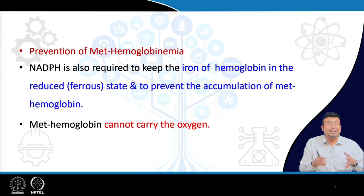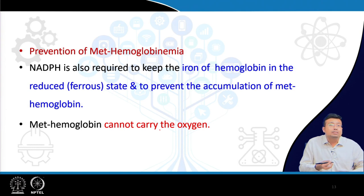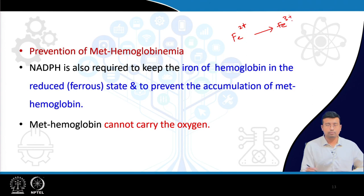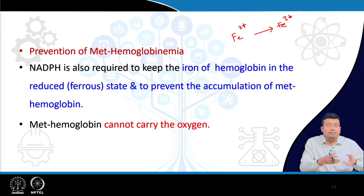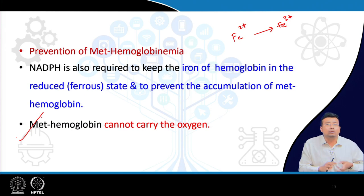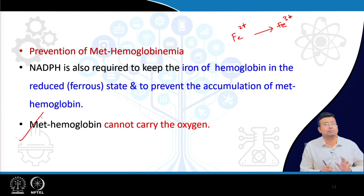NADPH is also important in prevention of methemoglobinemia. Hemoglobin carries oxygen with iron in the ferrous form (Fe²⁺), but it has a tendency to be oxidized to the ferric form (Fe³⁺), converting hemoglobin to methemoglobin, which cannot carry oxygen. NADPH helps maintain iron in the ferrous state to prevent methemoglobinemia. If there is a deficiency of NADPH, methemoglobinemia will result.